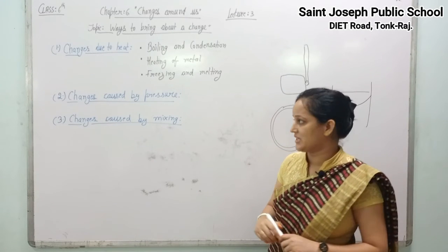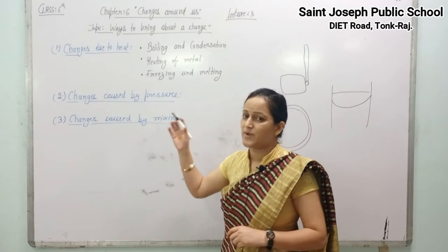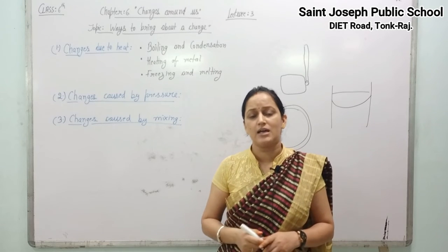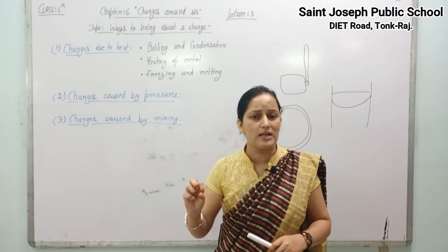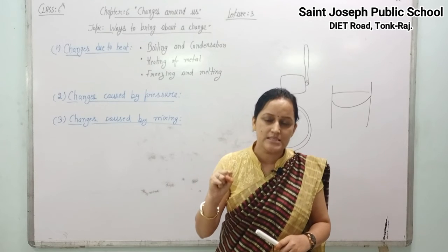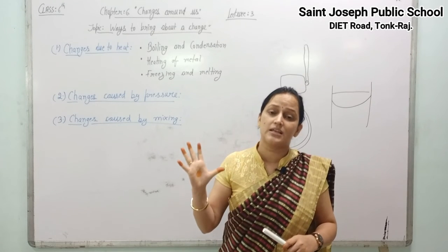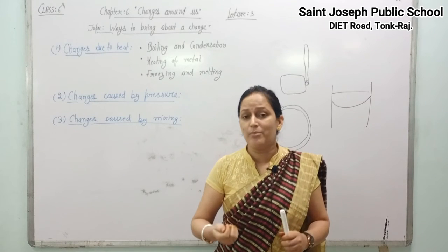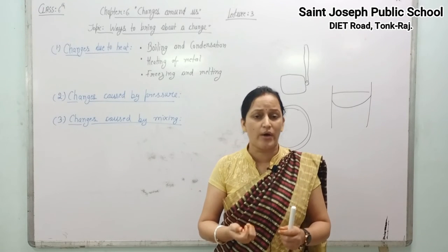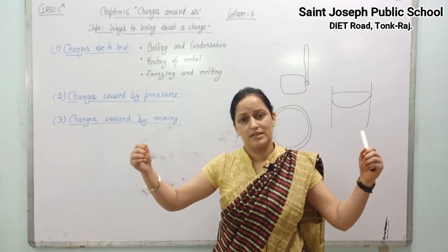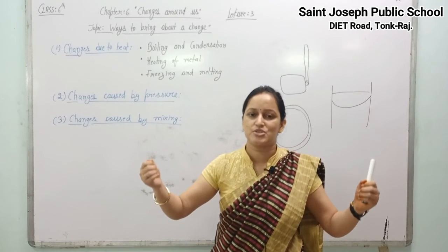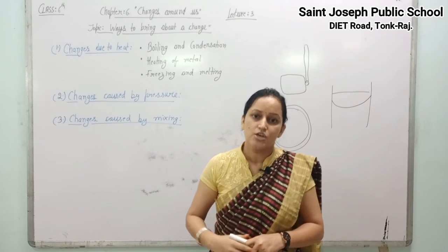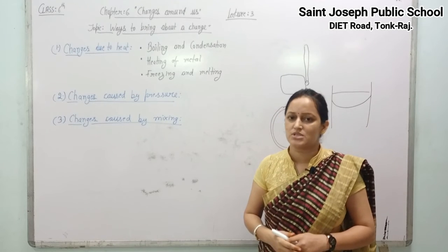The next way to bring a change is changes caused by pressure. This is another way by which we can bring changes. For example, sponge balls — when we apply pressure on them, they get squeezed, and when pressure is released, they attain their original position, shape and size. Similarly, rubber bands and elastic toys are stretched by applying pressure, and when the pressure is released, they return to their original shape. So pressure is another way to bring about a change.